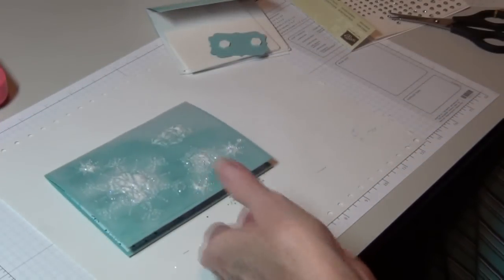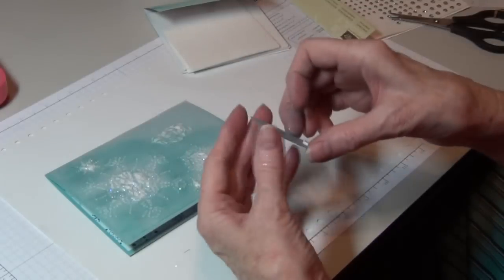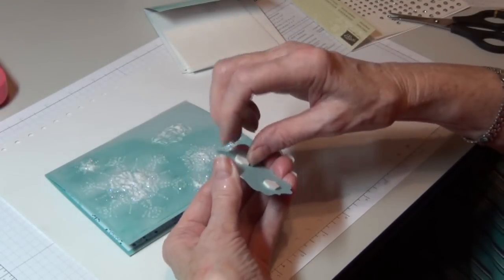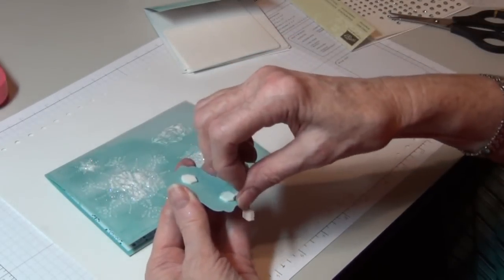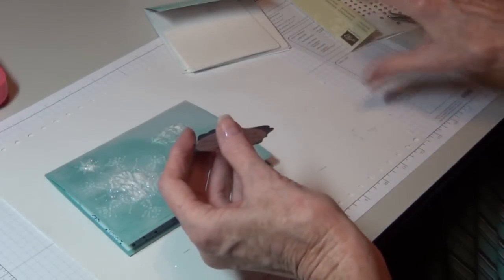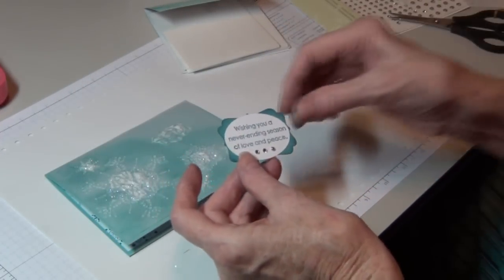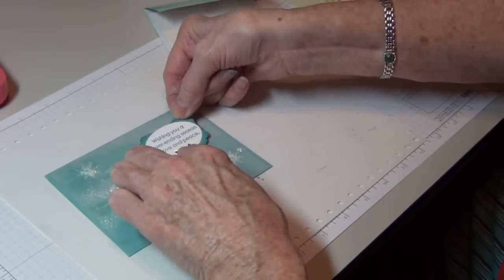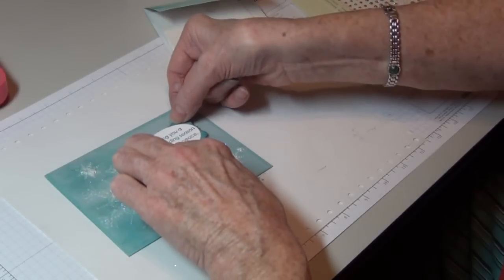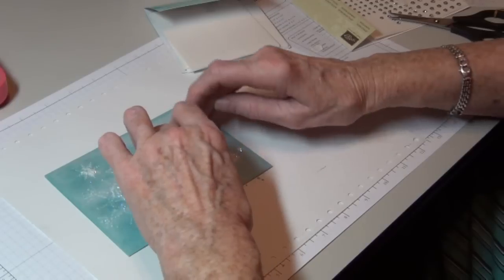Now I'm going to add my tag. I've already put the dimensionals on the back. And we will adhere this right where that glue is. I've already added my gems to this.